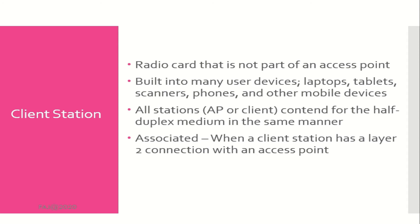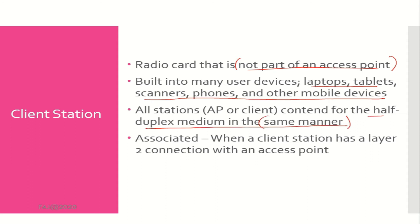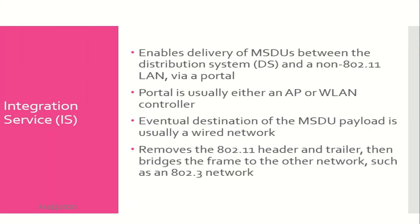Client station: any radio not used in an access point, typically referred to as a client station. Client station radios can be used in laptops, tablets, scanners, phones, and other mobile devices. Client stations must contend for the half duplex medium. When a client station has a layer 2 connection with an access point, they are known as associated. The integration service enables delivery of MSDUs between the distribution system and a non-802.11 LAN via a portal, which is usually either an AP or wireless LAN controller. The eventual destination removes the 802.11 header and trailer and bridges the frame to another network, such as an 802.3 network.